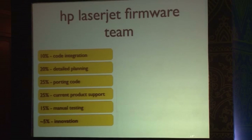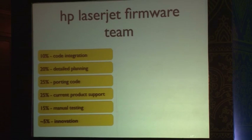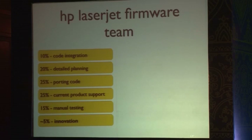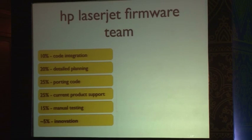They looked at what they were spending their time doing, and they were spending it on activities that were zero value add. Every time they brought out a new range of printers, they forked the code in version control, and they were spending 25% of their time porting code between branches. When they made a fix to one printer, they would have to port that fix over to all the others. The quality was poor. They were spending 25% of their time on product support and 20% of their time on detailed planning.